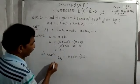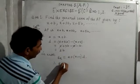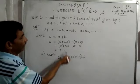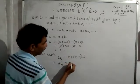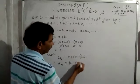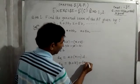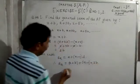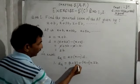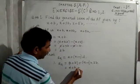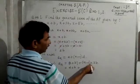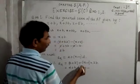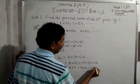Therefore, a_n equals a plus n minus 1 into d. Substituting our values: a is x plus b, and d is 2b. So a_n equals x plus b plus n minus 1 into 2b. Opening the bracket: x plus b plus 2bn minus 2b.